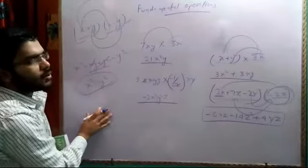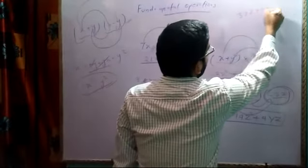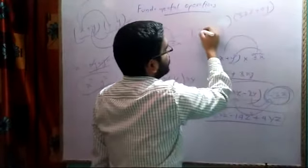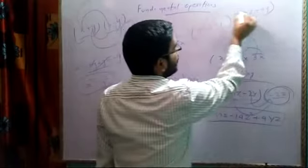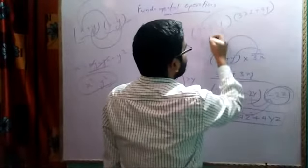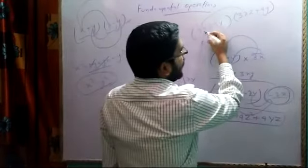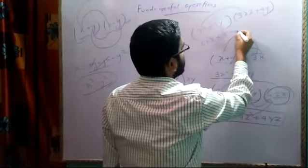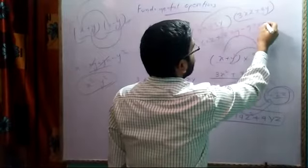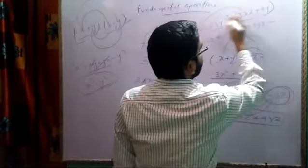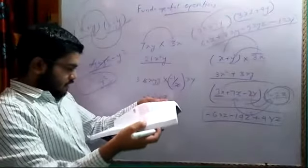I did not use the formula directly just to show how we multiply. For example, 3xz plus 4y multiplied with 2x minus 3y: 3 times 2 is 6 and x times x is x square, with z remaining; 2x times 4 is 8 giving xy; minus 3 times 3xz gives minus 9xyz; minus 3 times 4y gives minus 12, and y times y is y square.